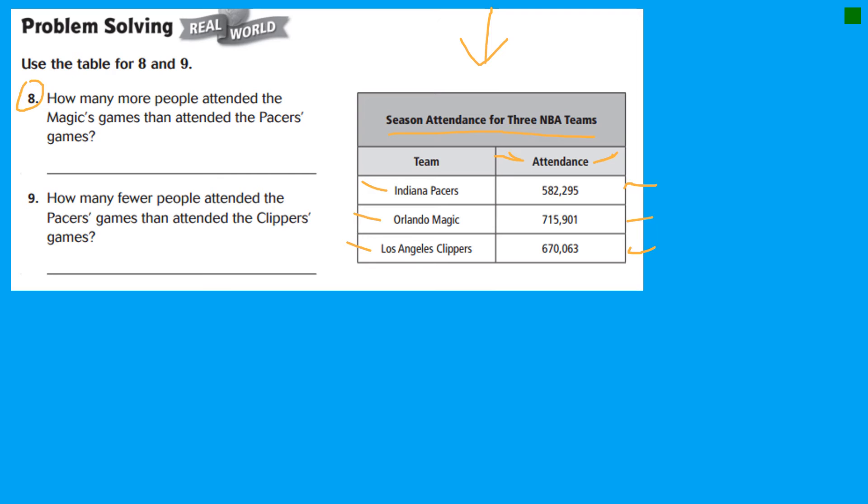Number eight. How many more people attended the Magic's games than attended the Pacers games? How many more people? They're asking me the difference in the number of people that came to the Magic versus the Pacers game. Any time they're asking you the difference, that's subtraction, boys and girls, the difference between the number of people in those two games. So the difference, I have to subtract them. So when I'm setting this up to subtract, I'm going to be sure that I put the greater value as the top number.